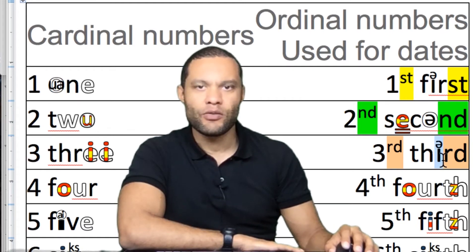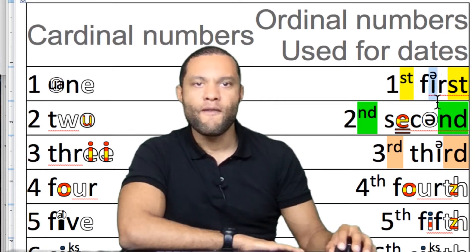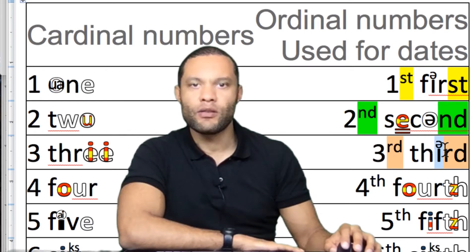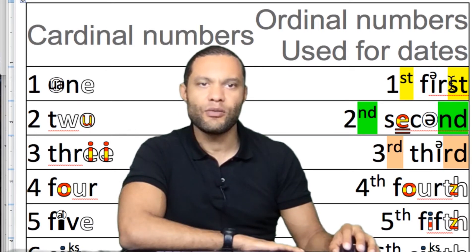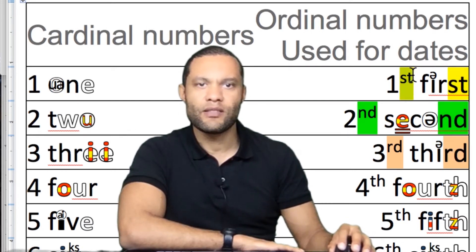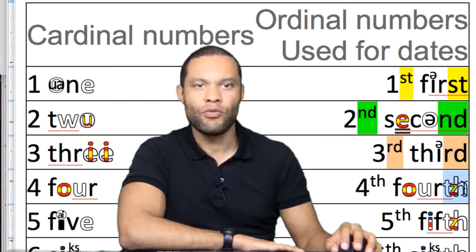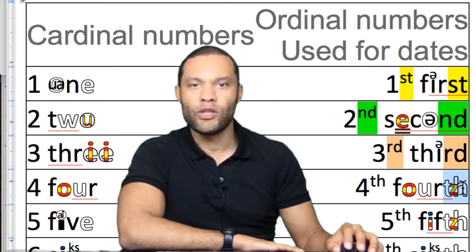Not 'therd' — it's 'third'. So: first, second, third. Notice that the last two letters of the ordinal word are the same letters shown here, and that's true for all ordinal numbers.